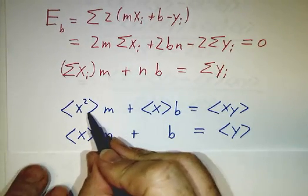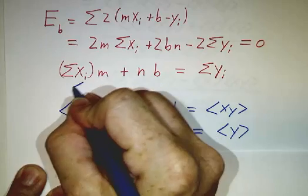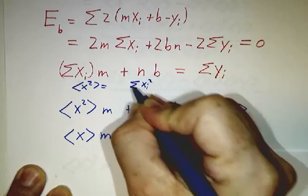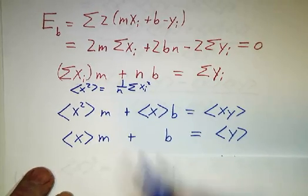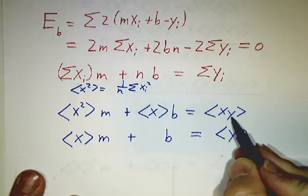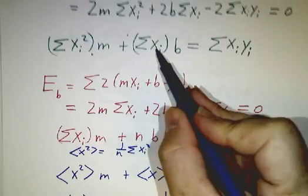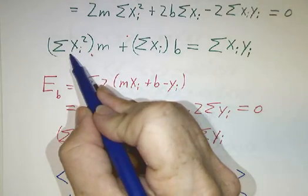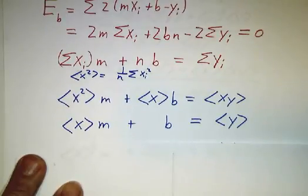Now what I've done here is I've introduced a new notation here. The angle brackets means average. So when I write the average value of x squared, that's the same thing, taking the sum of all the x squareds and then dividing by n, because we're averaging instead of summing. The average value of x is the sum of all the x's divided by n. The average value of xy is the sum of all the xy's divided by n.